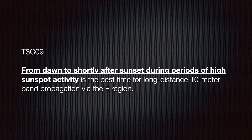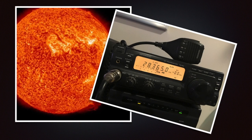From dawn to shortly after sunset during periods of high sunspot activity is the best time for long-distance 10-meter band propagation via the F region. For 10 meters to travel long distances, it needs to skip off the ionized F2 layer in the ionosphere. Under rare conditions after solar activity, 10-meter signals can travel greater distances, but since the F1 and F2 layers combine at night, F2 refraction is at its most poor during that time period.